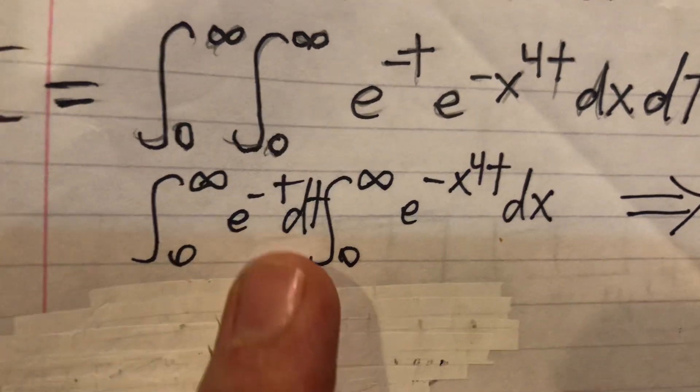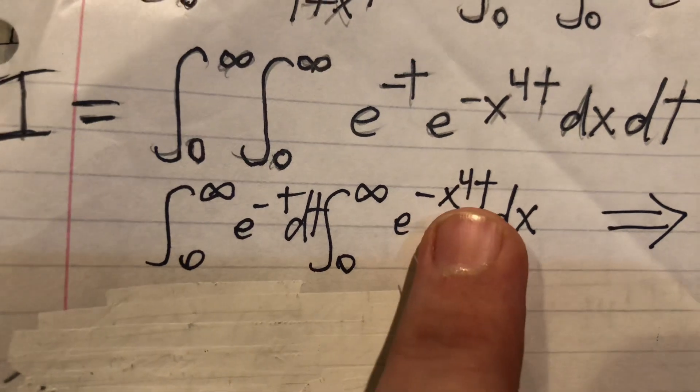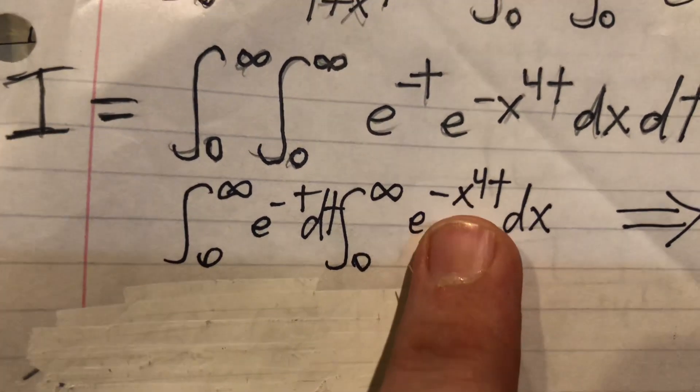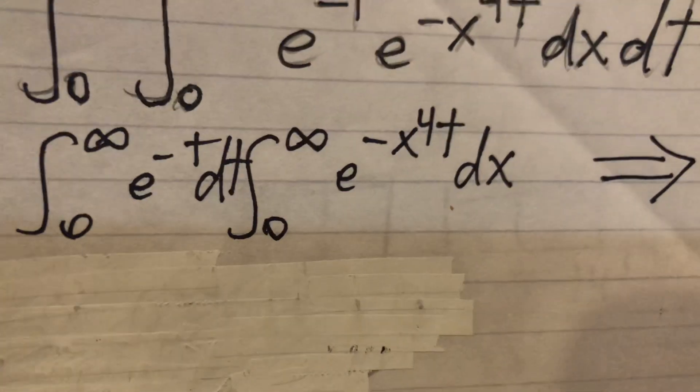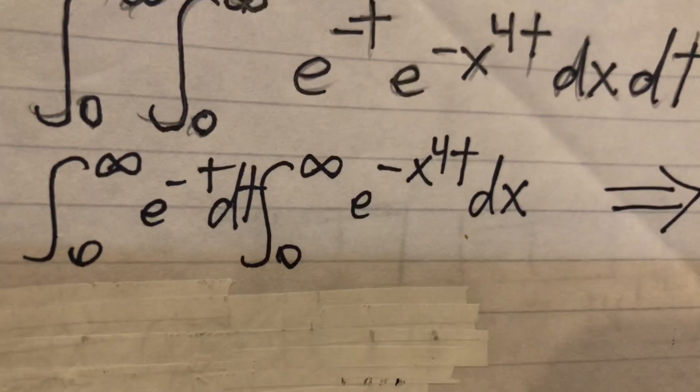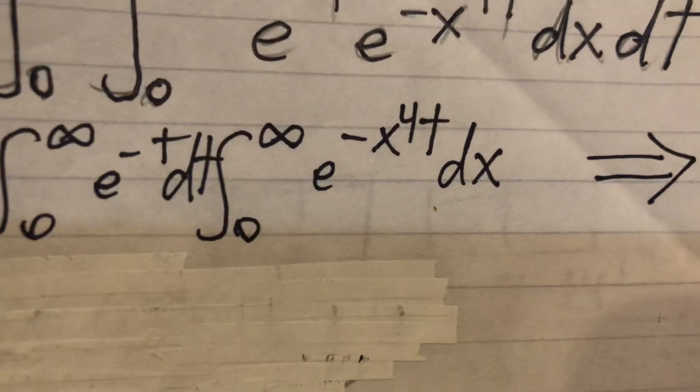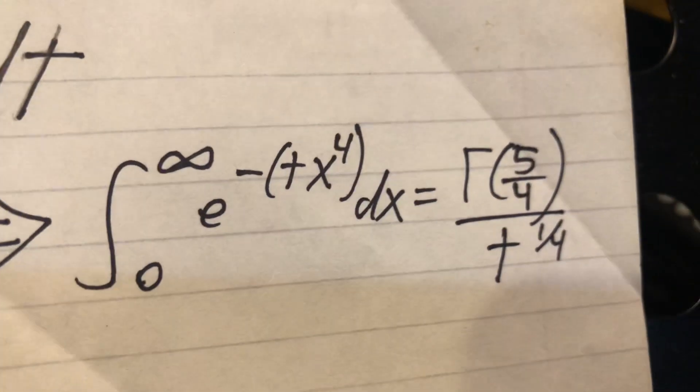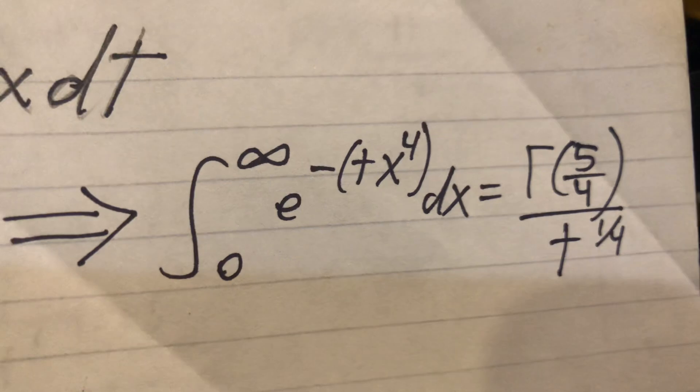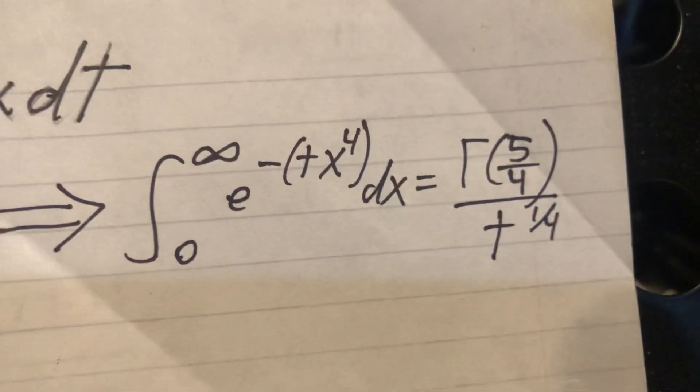So we can split up this exponential - minus t comes out front here, and then you integrate this. This looks kind of different - it's x to the fourth - which is kind of weird, but Wolfram Alpha can handle it. I'm sure we could do it by hand if we needed to, but we just put it in Wolfram Alpha.